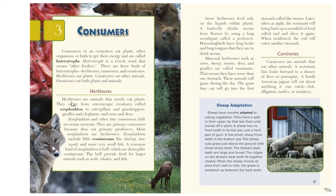Herbivores are animals that mostly eat plants. They range from microscopic creatures called zooplankton to caterpillars and grasshoppers, giraffes and elephants, and cows and deer. Zooplankton and other tiny consumers drift on ocean currents. They are primary consumers because they eat primary producers. Most zooplankton are herbivores. Zooplankton include little crustaceans like shrimp, tiny squid, and even some very small fish. A common kind of zooplankton is krill — shrimp-like crustaceans that provide food for larger animals such as seals, whales, and fish.